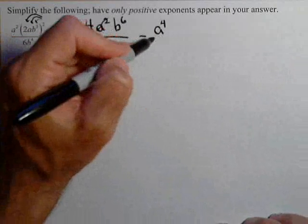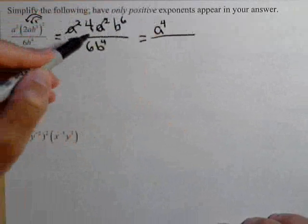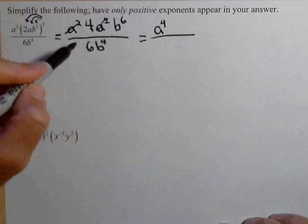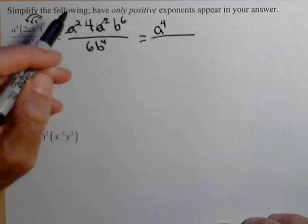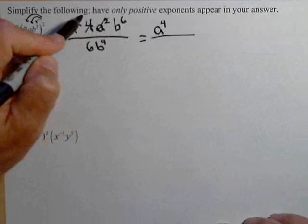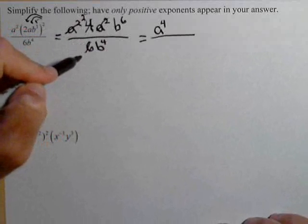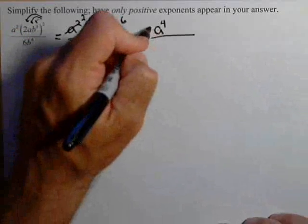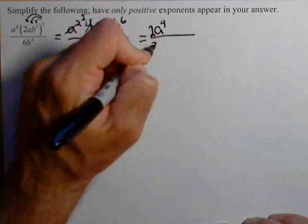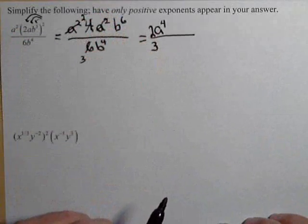Next, let's look at our constant. We have a 4 on top and a 6 on bottom. Everything's multiplied, so everything's part of a product. We can cancel a 2 out on top, which leaves us with 2, and a 2 out on bottom, which leaves us with 3. So let's write those out front: 2 on top and 3 on bottom.